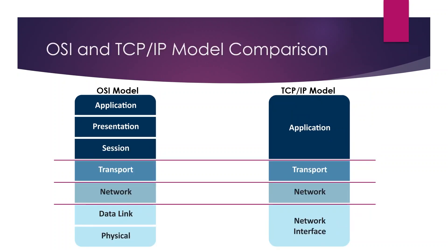There's also the TCP/IP model, which is more current in terms of how things actually work, but the OSI model is still referenced frequently — especially for troubleshooting. The TCP/IP Application layer maps to the top three OSI layers: Application, Presentation, and Session. Transport maps to Transport, Network maps to Network, and the TCP/IP Network Interface layer maps to OSI's Data Link and Physical layers.